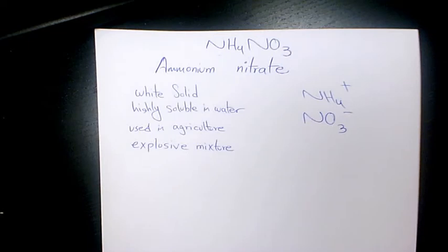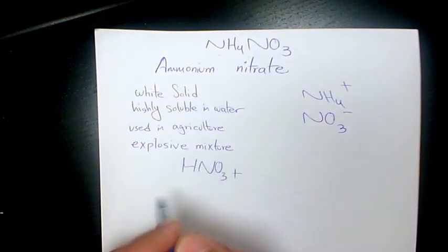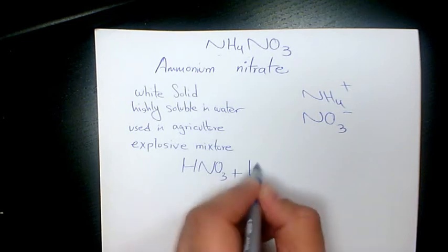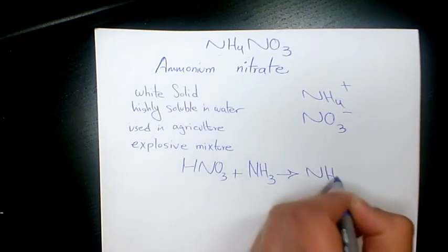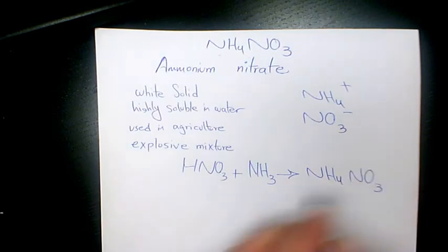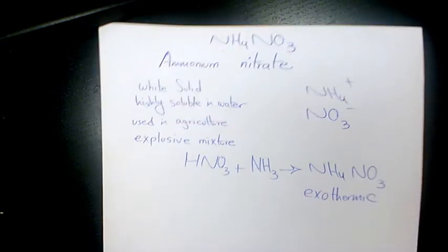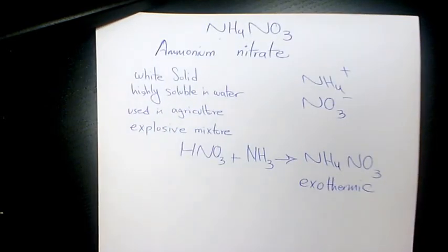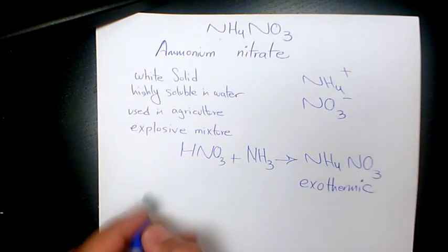So how do we produce ammonium nitrate? It is basically when you add nitric acid and ammonia that will produce NH4NO3, and it is highly exothermic, meaning that it releases a large amount of heat when ammonium nitrate is produced.